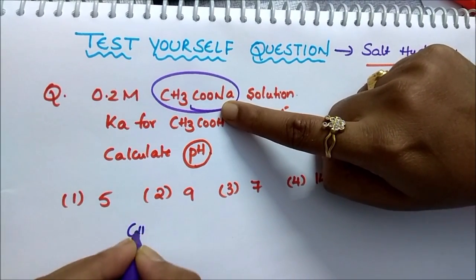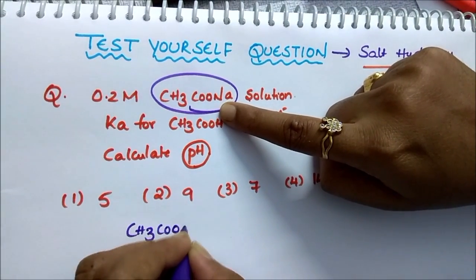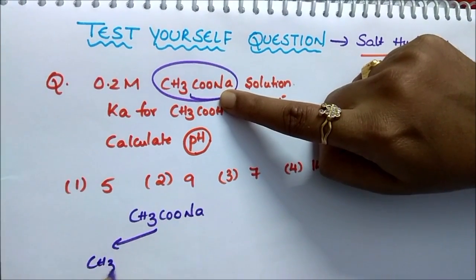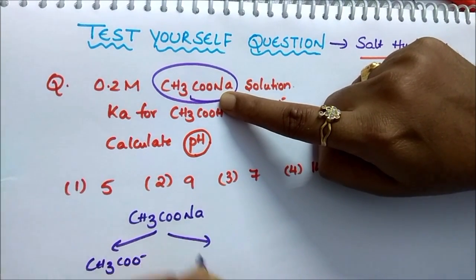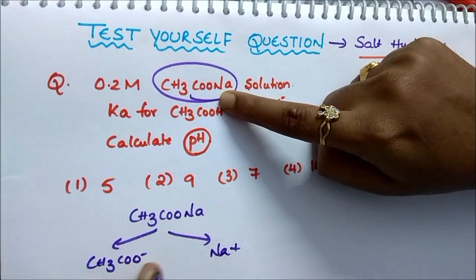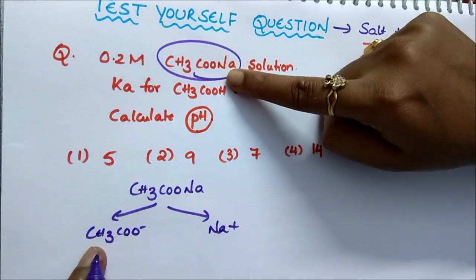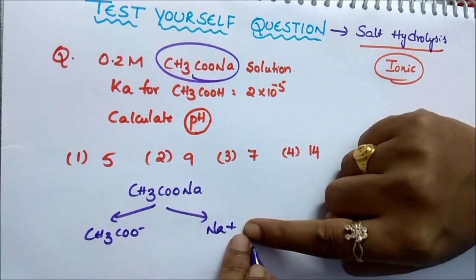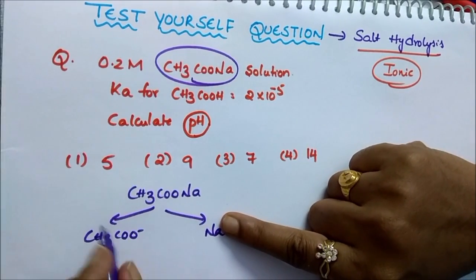CH3COONa dissociates into CH3COO- and Na+. If you add H+ from water you get CH3COOH, and if you add OH- you get NaOH. So it is a strong base and it is a weak acid.